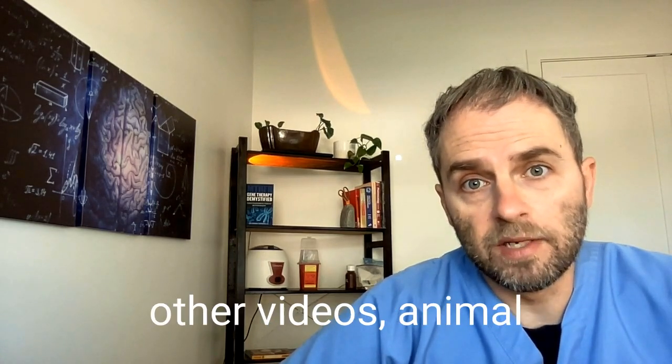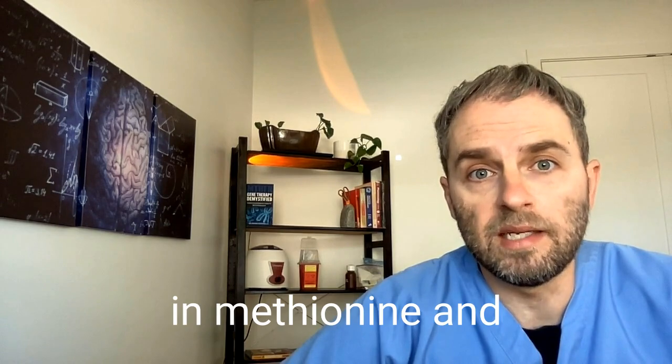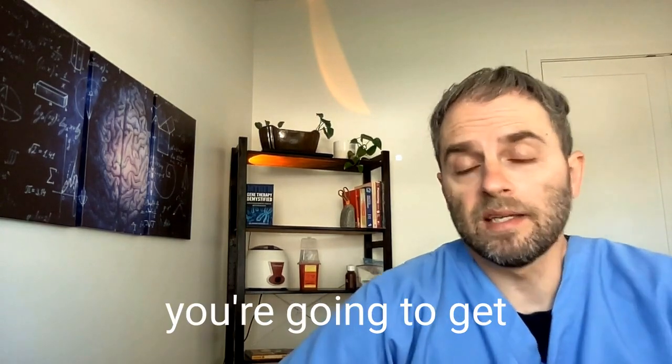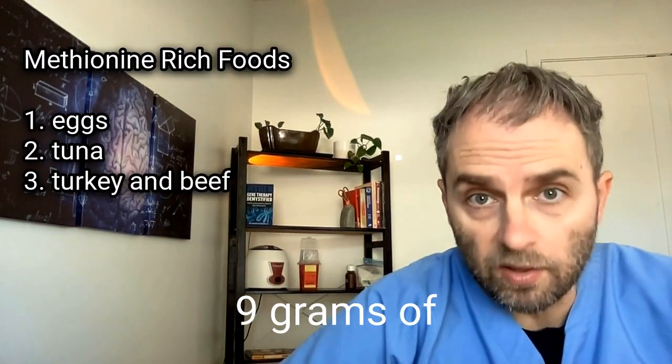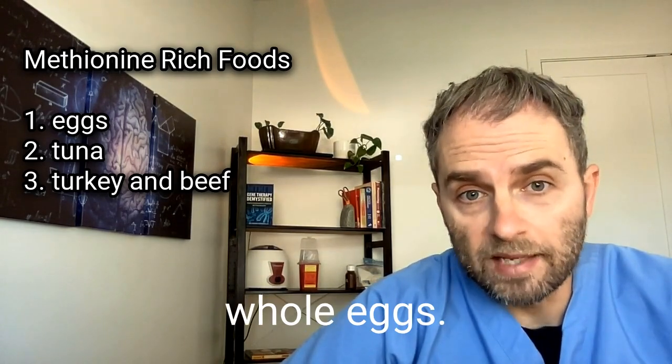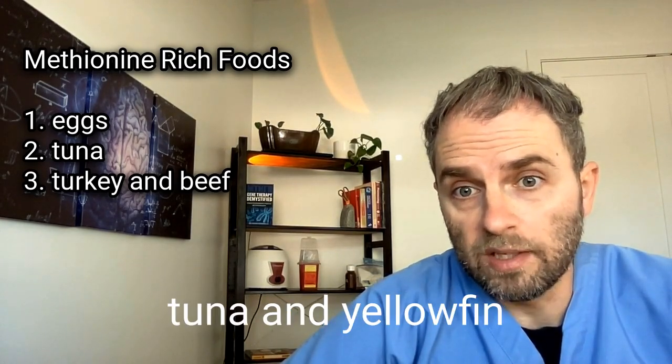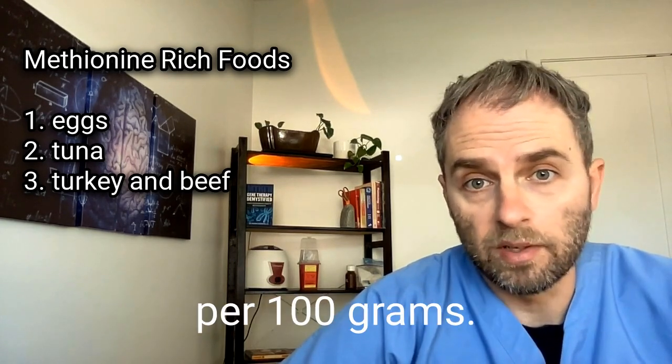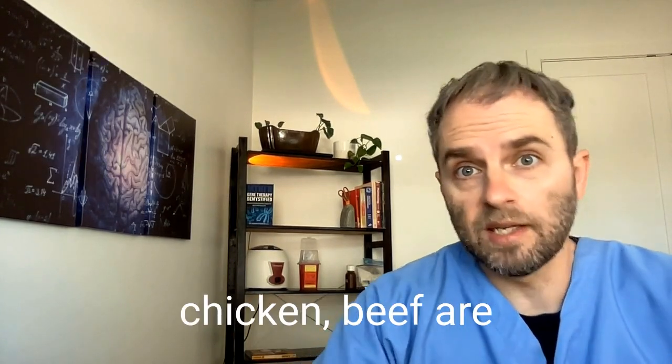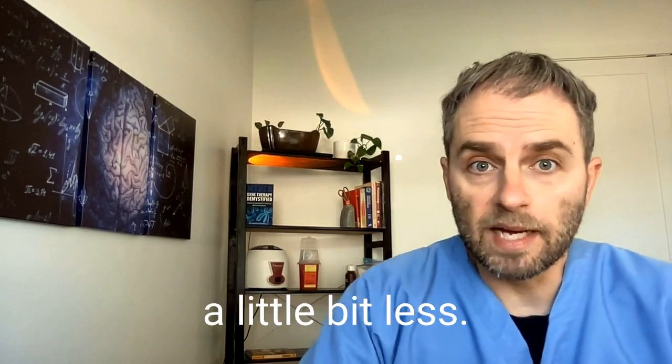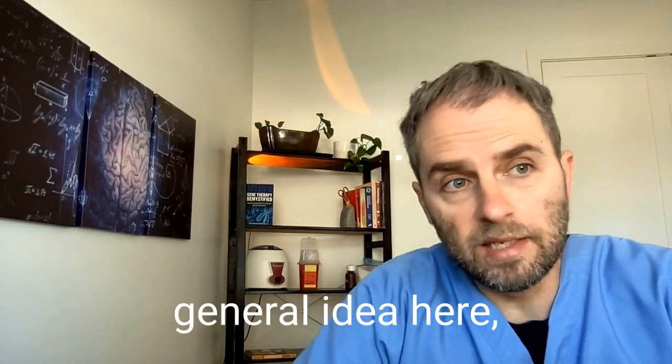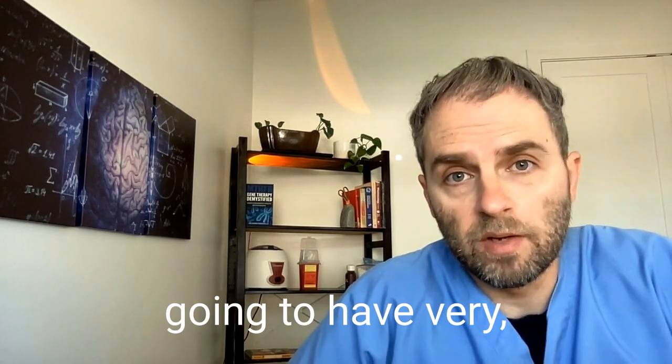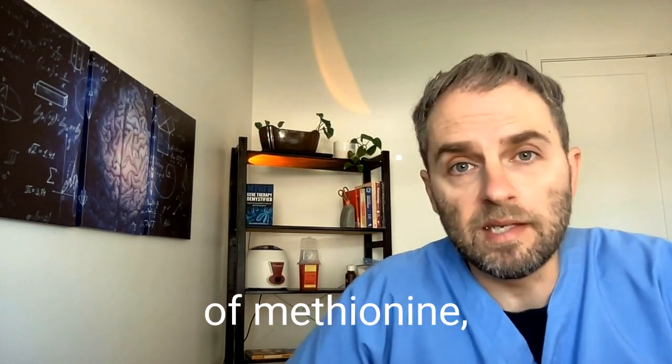As I've said in other videos, animal protein is very rich in methionine. Per 100 grams you're going to get somewhere around 0.9 grams of methionine from whole eggs. Fish sources like tuna and yellowfin might have 0.7 grams of methionine per 100 grams. Things like turkey, chicken, beef are going to have a little bit less.